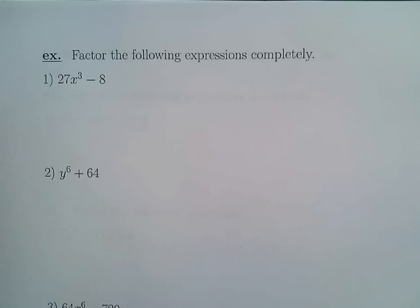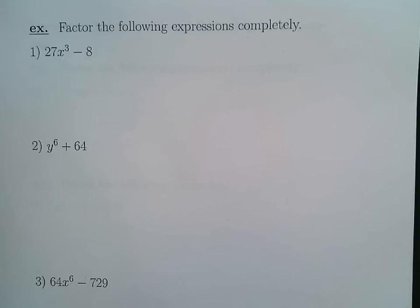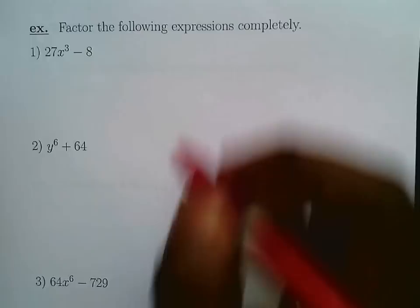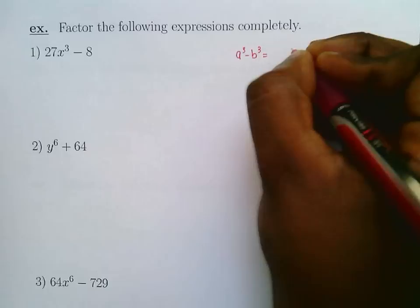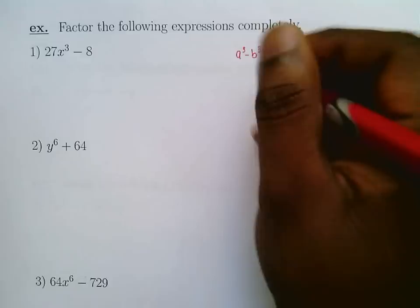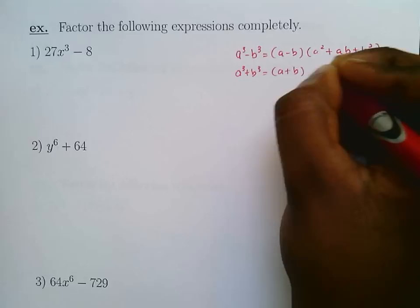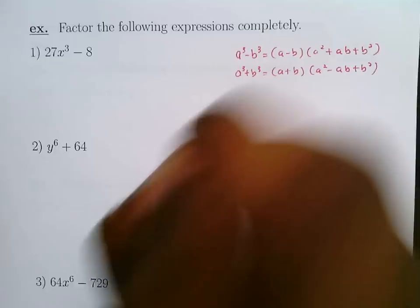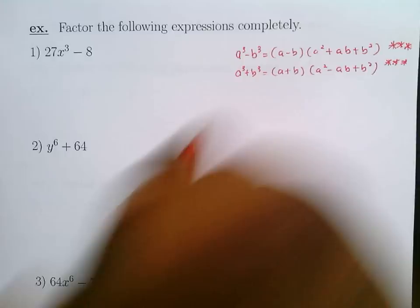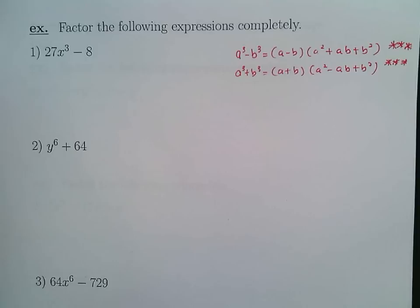Now for more factoring — these examples relate to the difference and sum of two cubes formulas. Write them down: a³ - b³ = (a - b)(a² + ab + b²), and a³ + b³ = (a + b)(a² - ab + b²). These are formulas you need to remember for exams and quizzes.